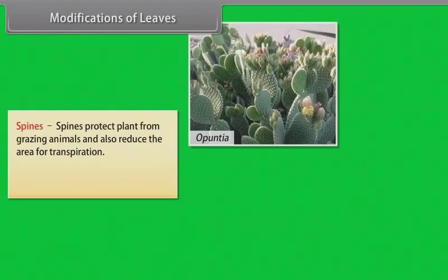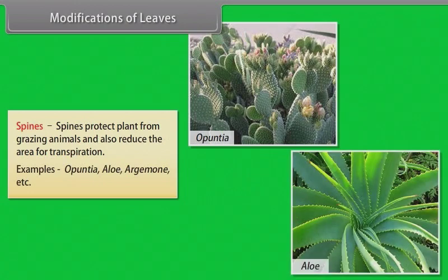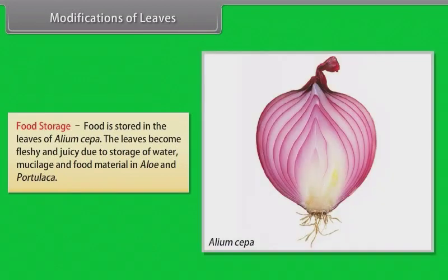Spines: Spines protect plant from grazing animals and also reduce the area of transpiration. Examples: Opuntia, Aloe, Argemone, etc. Food Storage: Food is stored in the leaves of Allium cepa. The leaves become fleshy and juicy due to storage of water, mucilage and food material in Aloe and Portulaca.